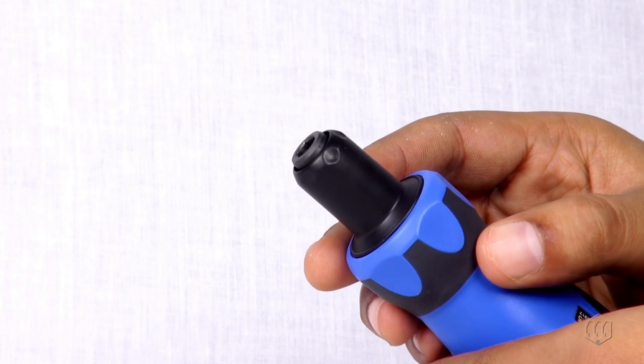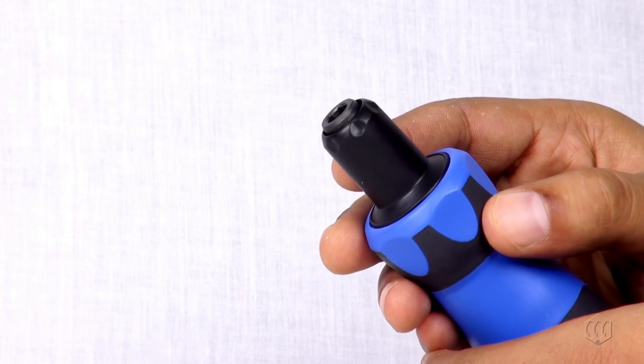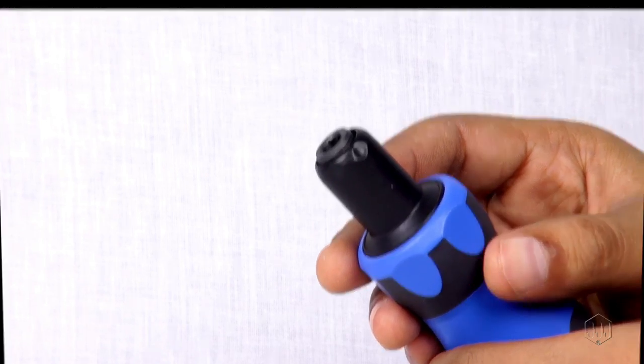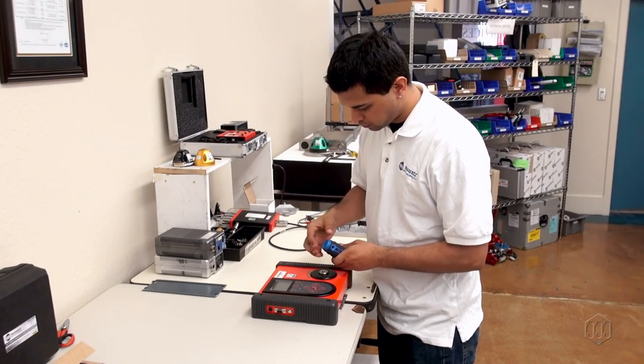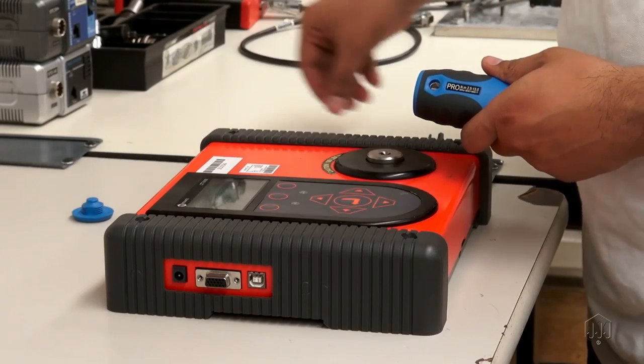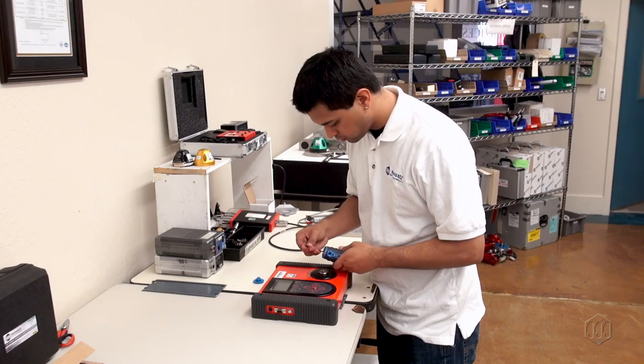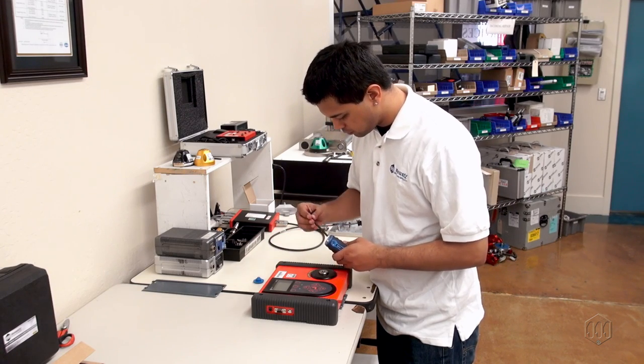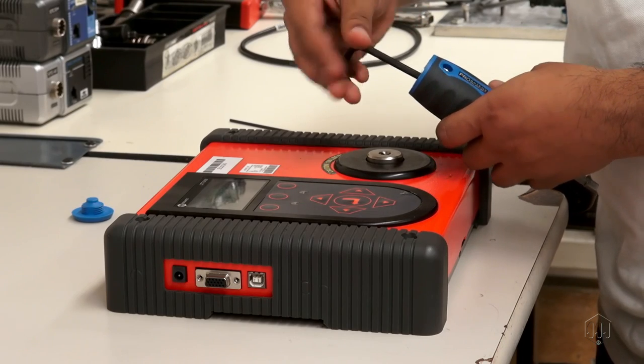The TLS Pro is a preset torque screwdriver that does not feature an external adjustment scale. The tool has an internal adjustment mechanism for setting the torque value and must be preset using a torque tester.